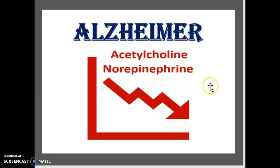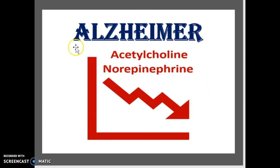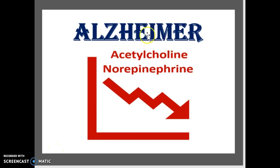The first thing to look at when examining Alzheimer's is the production rate of acetylcholine and norepinephrine. The main thing that really causes Alzheimer's is a very high drop in both of these — the production rate is going to drop significantly.